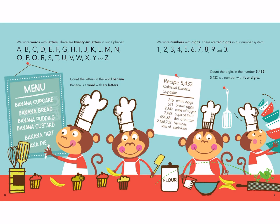We write numbers with digits. There are 10 digits in our number system: 1, 2, 3, 4, 5, 6, 7, 8, 9, and 0. Count the digits in the number 5,432 — 5,432 is a number with four digits.